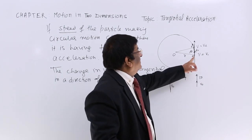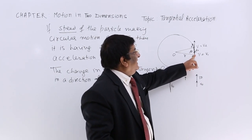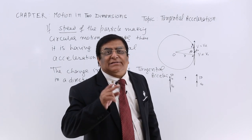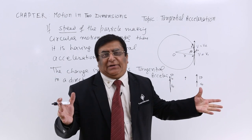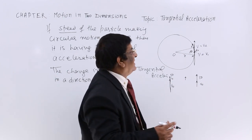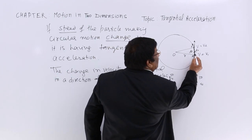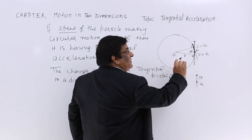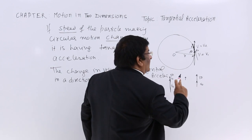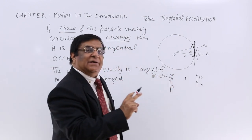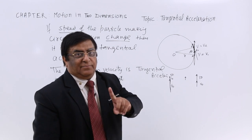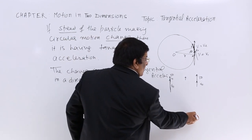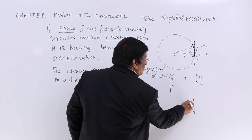If this particle is going at a speed of 40 here and 50 here, is it having centripetal acceleration or not? The answer is: because it is changing its direction, therefore it has centripetal acceleration — because it is changing its direction from V1 to V2.